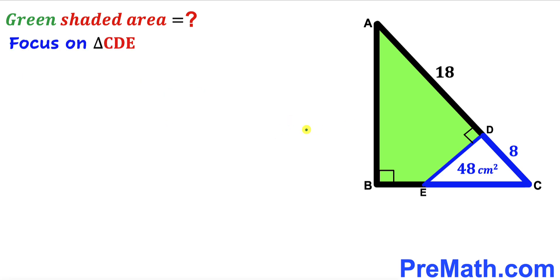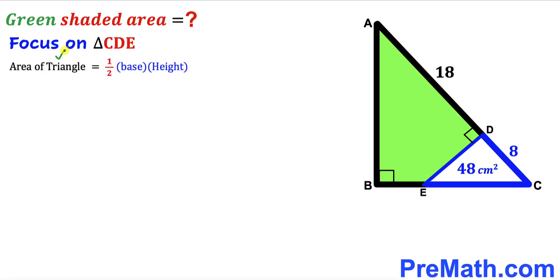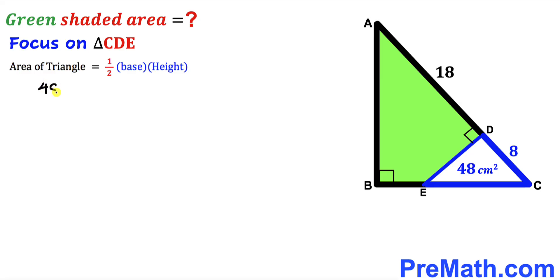Let's get started. Here's our very first step — let's focus on this blue right triangle CDE. We know the area of this triangle has been given to us as 48, and this side length CD is 8. Let's recall the area of a triangle formula: it is always equal to one half times base times the height. In our case the base of this blue triangle is 8, the height is DE, and the area is 48. So we get 48 equals one half times 8 times DE.